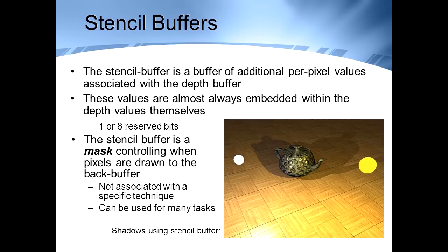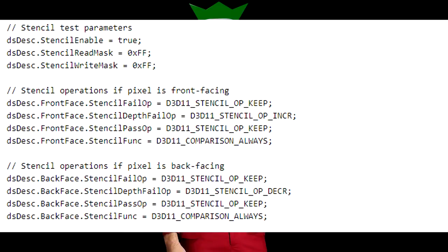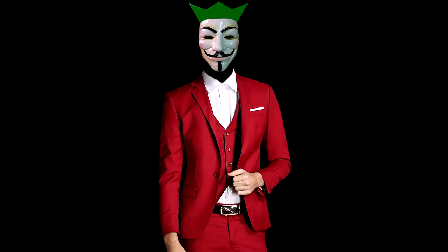One last thing I want to mention is something related to the depth buffer called the stencil buffer. It's similar — also stored per pixel, often stored together with the depth buffer. It's kind of like a Z-buffer but more flexible. You can use it for rejecting pixels to do stuff like drawing a HUD, portals, mirrors, and shadow effects. You have more control over how values are written and how comparisons are made. I may or may not go into it later in this series, but I'll definitely cover it in the Hardware 3D series.